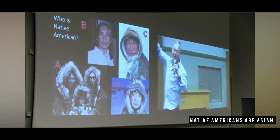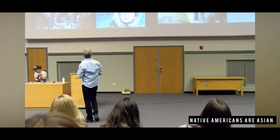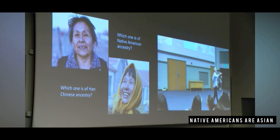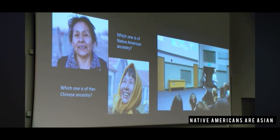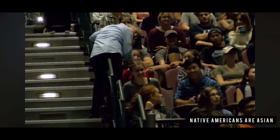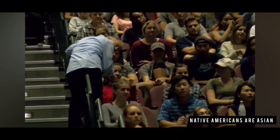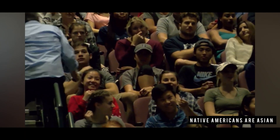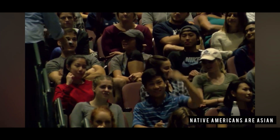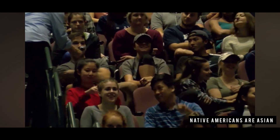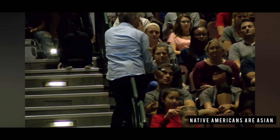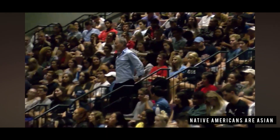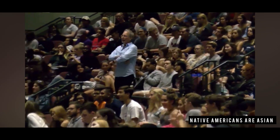So the others are Siberian. We're gonna come to this. All right, let's do the next one. Which one is of Native American ancestry and which one is of Han Chinese ancestry — Han being the dominant ethnic group in China? I'm gonna say the one on the right is Han Chinese ancestry, but I'm not too sure. Left Native American, right is Chinese? Yeah, the top one is Native American. All right, go to the next slide.